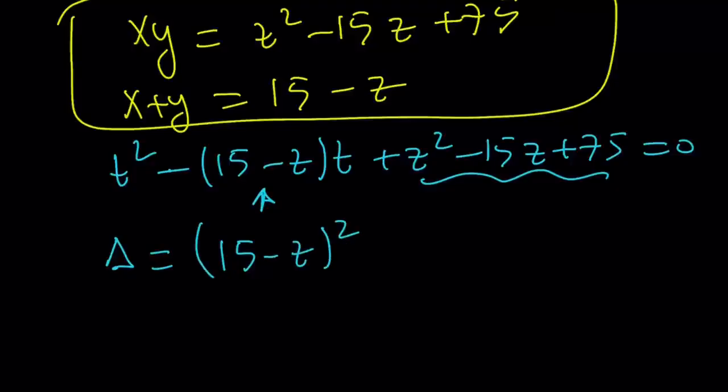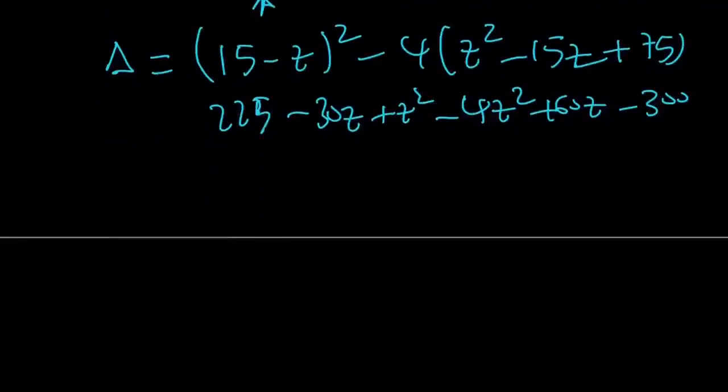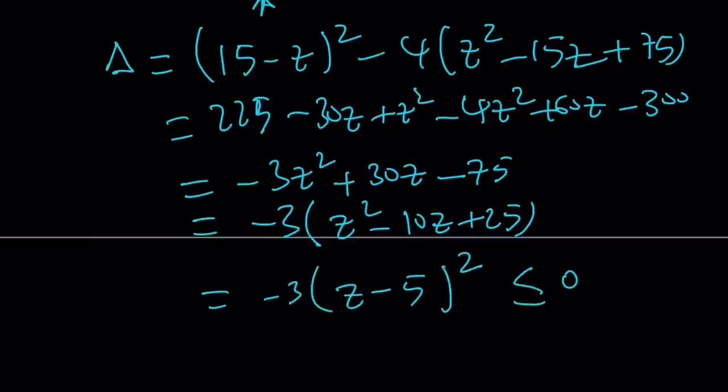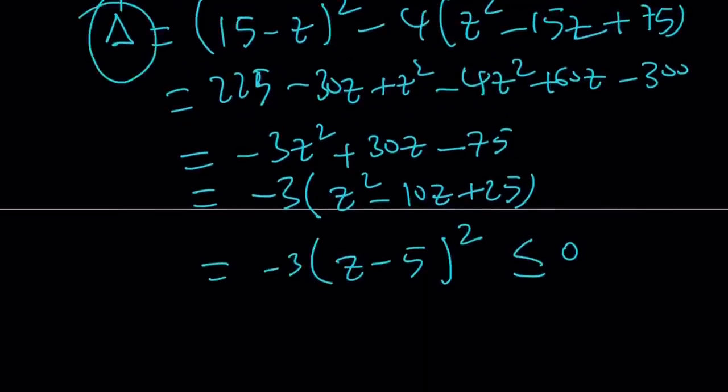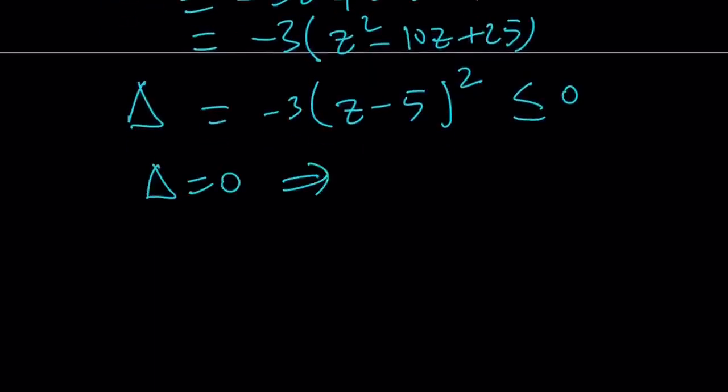Take a look. This is 225 minus 30z plus z squared minus 4z squared plus 60z minus 300. Okay. This is going to give you z squared minus 3. 4z squared is going to give you negative 3z squared. And then you're going to get negative 30 plus 60z. That's going to be positive 30z. And then finally, you have the 225 minus 300, which is negative 75. And guess what? You can take out a 3, negative 3 I mean, z squared minus 10z plus 25. And this becomes equivalent to z minus 5 quantity squared. This is obviously always less than or equal to 0. And it can't be happening because we're looking for real solutions. But delta cannot be negative. Discriminant, right? So you want it to be 0 at least. This means delta is 0. We want to have real solutions. And this means z equals 5. If you plug it in, you get x equals 5 and y equals 5.